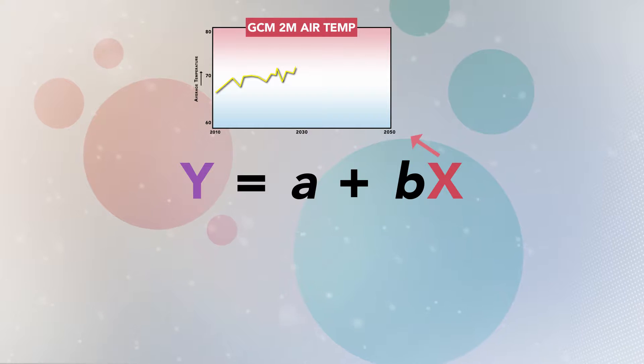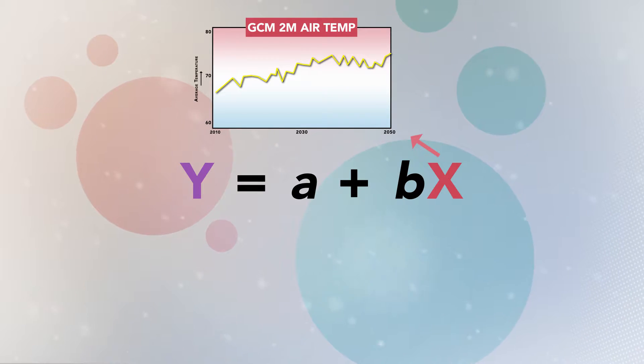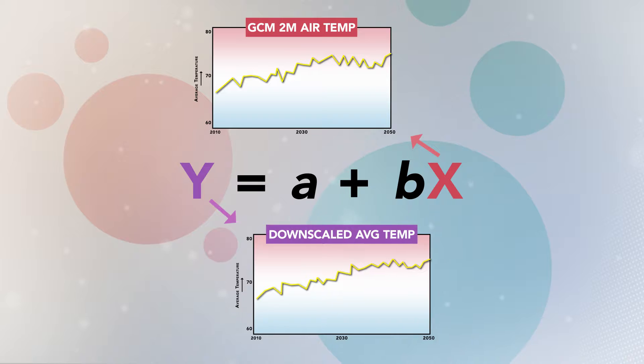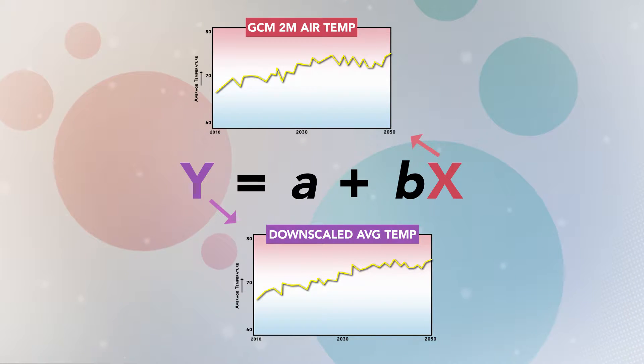Finally, we use this equation and a similar set of predictors obtained from the GCM to obtain the historical conditions and future projections downscaled to Norman, Oklahoma. It is important to obtain a set of predictors that adequately represent the relationship between the large-scale atmosphere and the local-scale variable of interest. This choice is particularly important near mountain and coastal regions, where there can be large variations in model performance. Still, regression techniques have been popular because they are easy to implement.